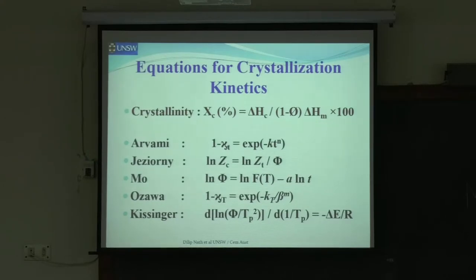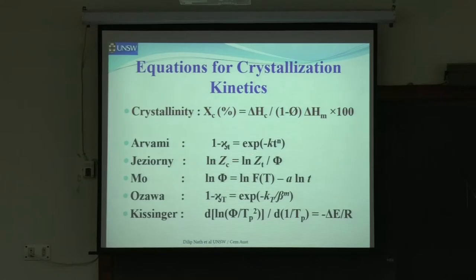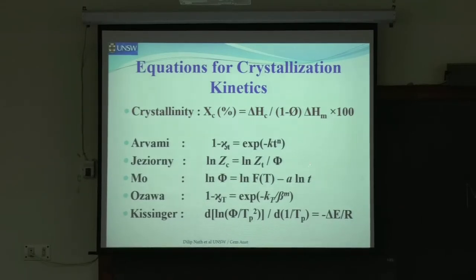Now, the equations for crystallization. These are the different equations people have come up with, and hopefully some of you will come up with more. This is percentage crystallization, which relates to delta H and the heat of melting. There are equations involving logarithmic and exponential stages. Logarithmic and exponential are inversely related in a way. One effect of the logarithmic approach is that the effect is less.